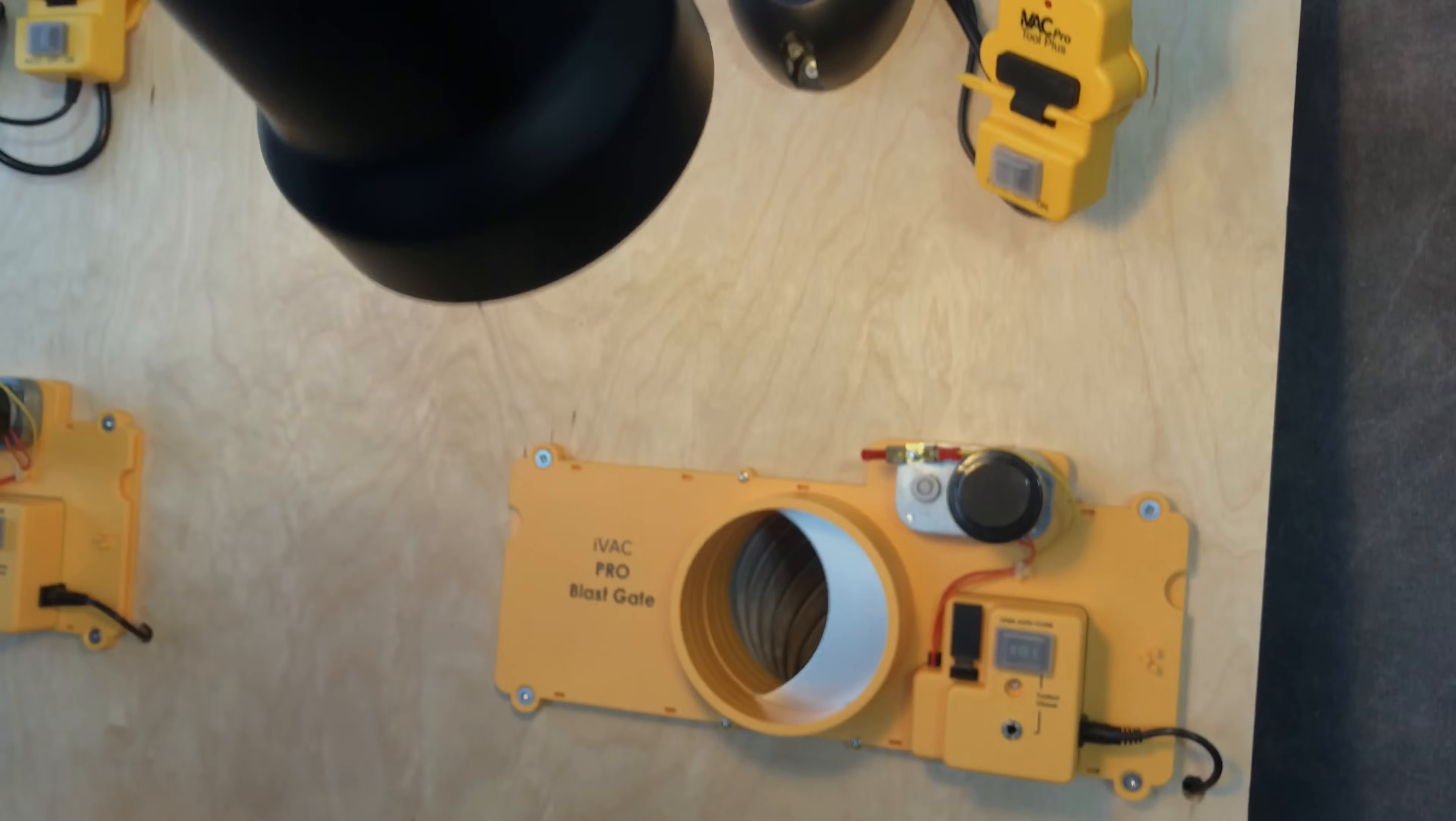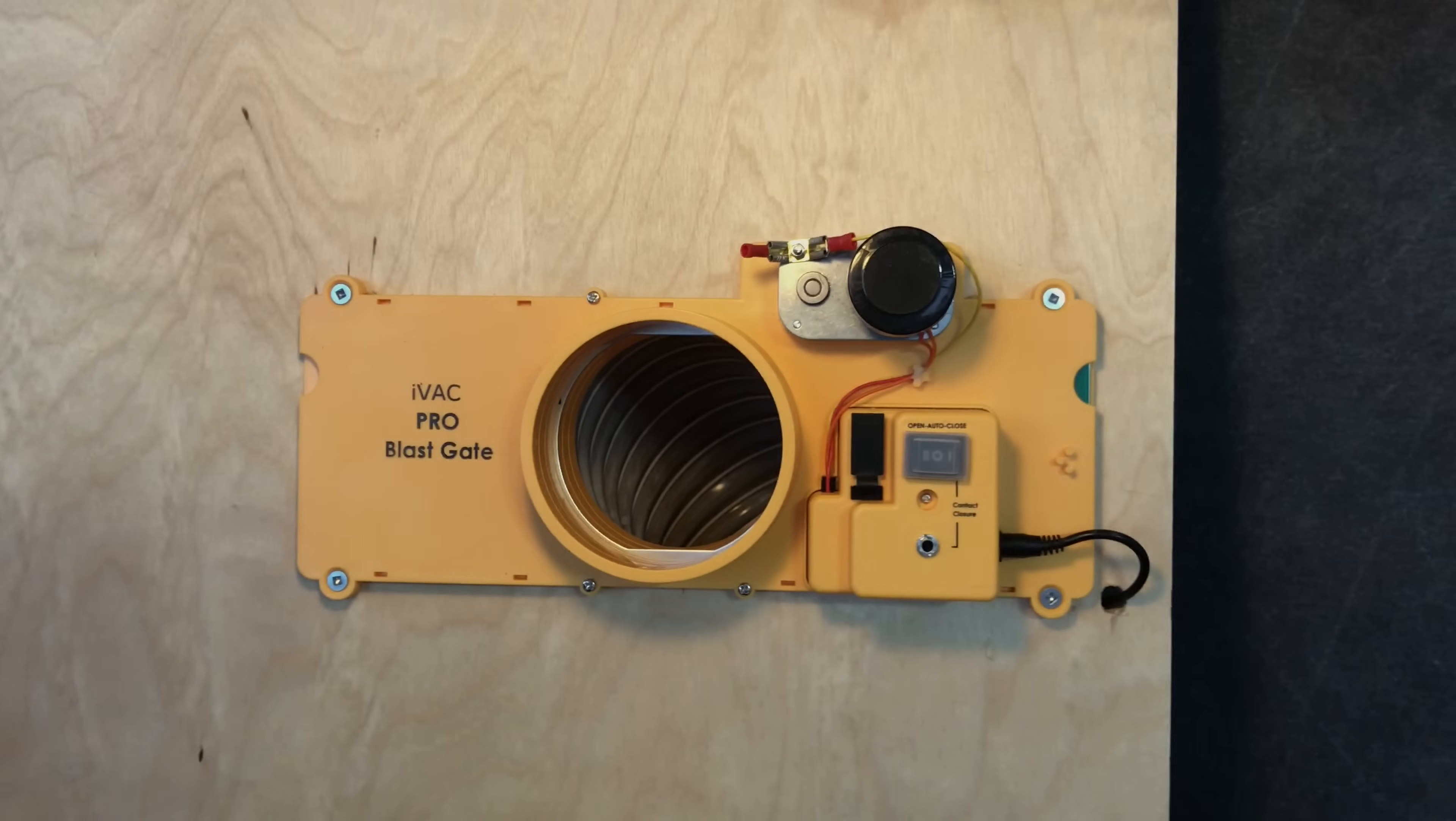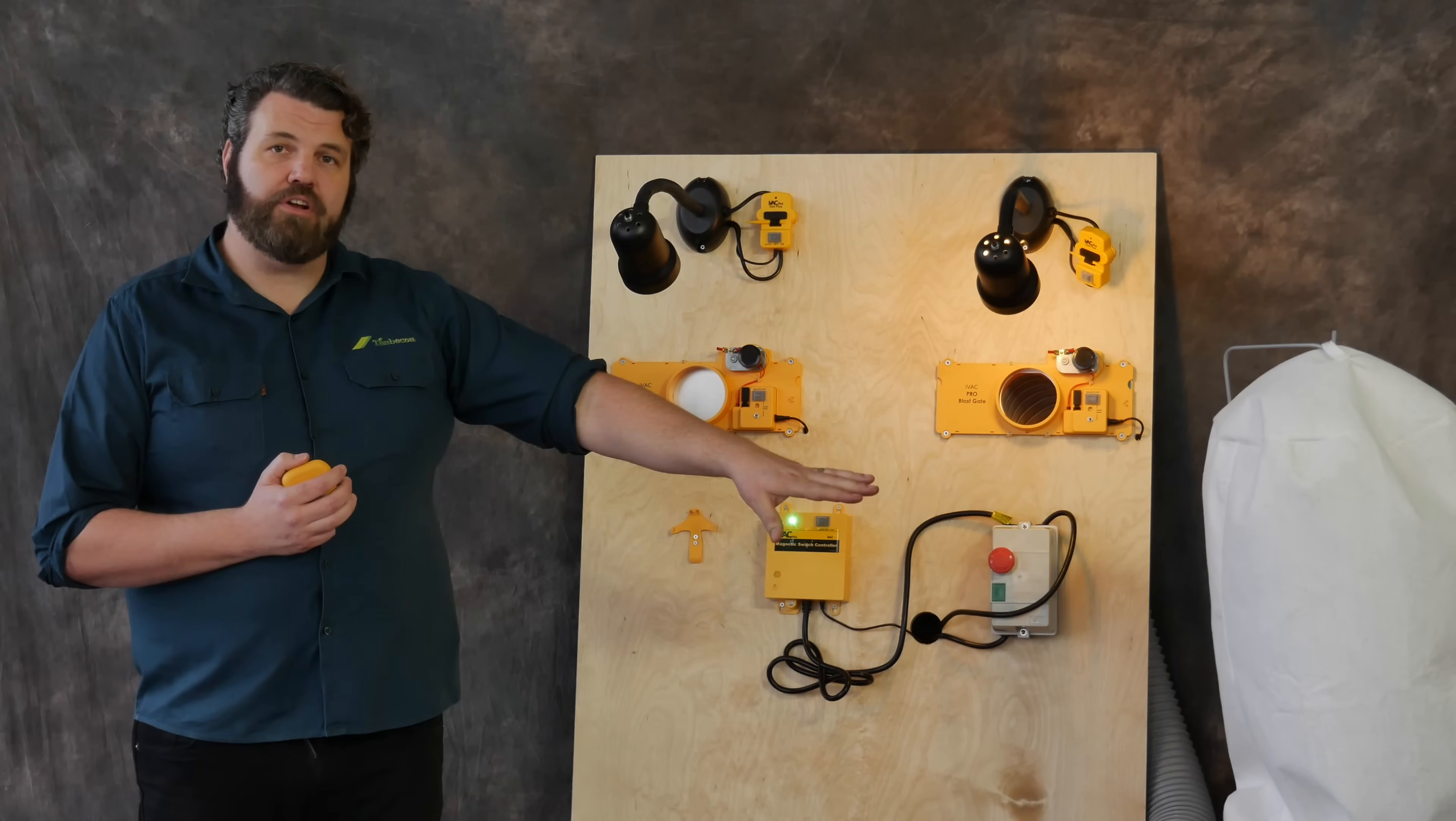By turning on your power tool, it will open the blast gate and it will also turn on the dust extractor.